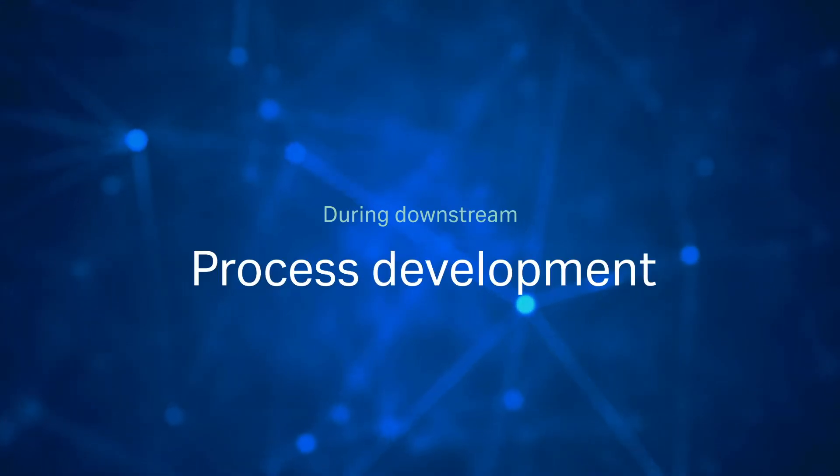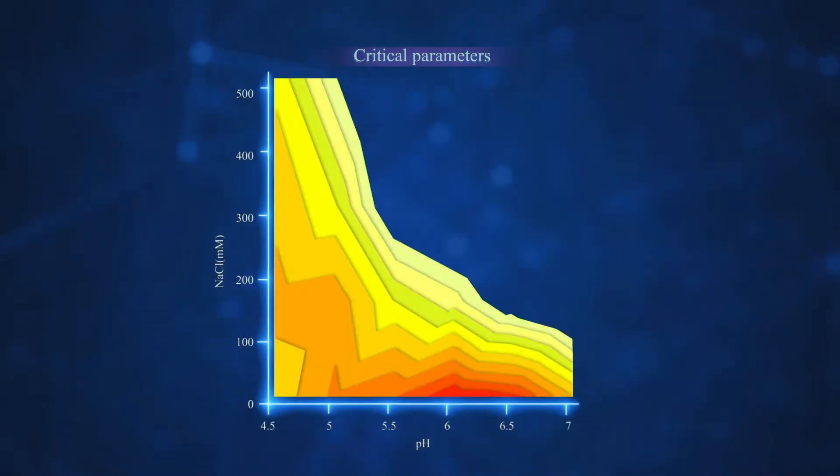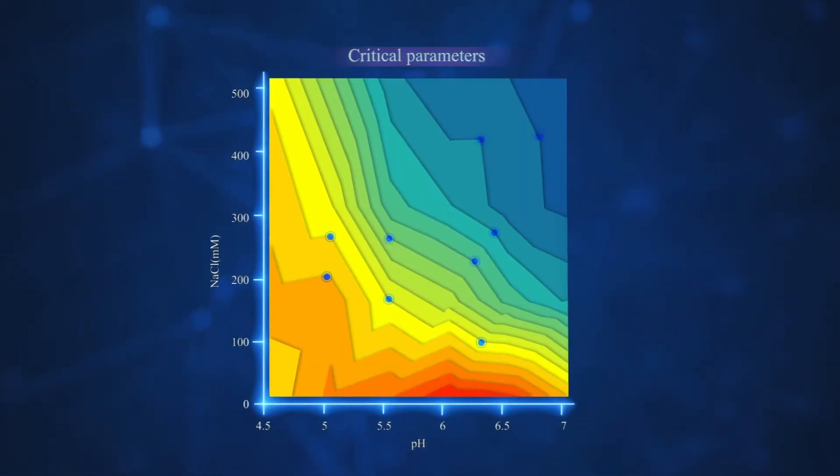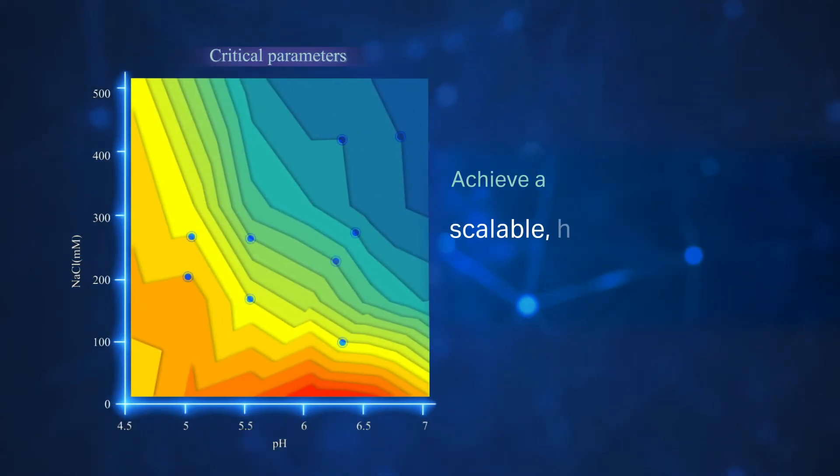During downstream process development, critical parameters are optimized by testing a multitude of conditions to achieve a scalable, high-yield, robust production process.